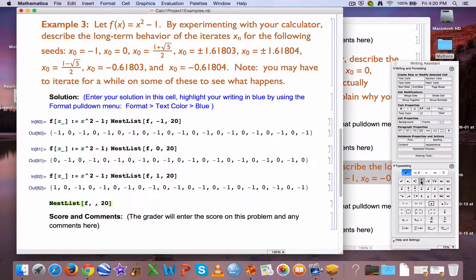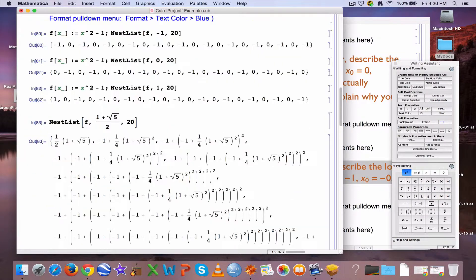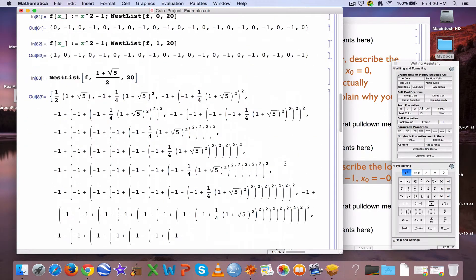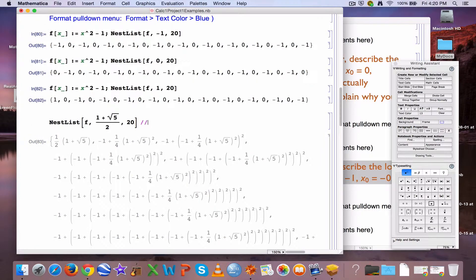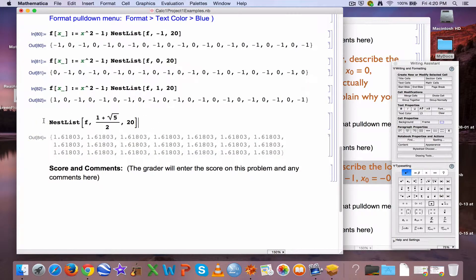Though on many calculators, it would be an approximate expression. I can use this writing assistant over here to get that expression in there in exact form. Whoa, that's kind of crazy looking. What's going on there? We might numerically approximate those like this with the capital N feature, and lo and behold, they actually seem to be all the same number.